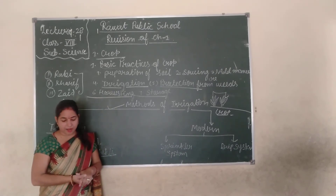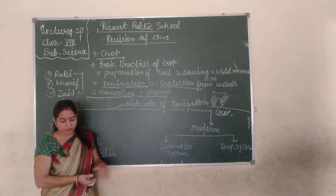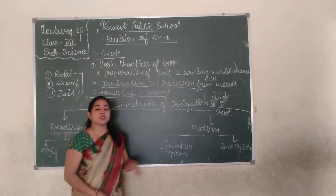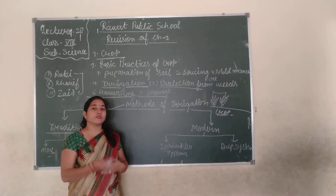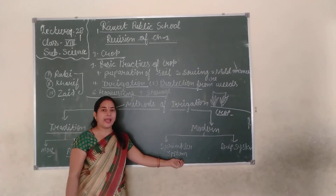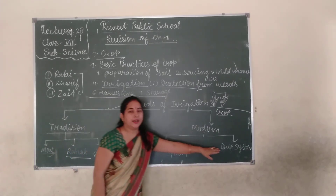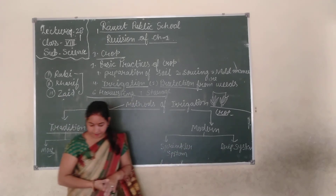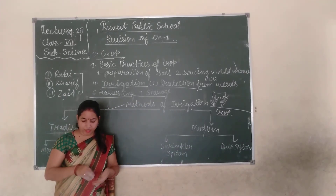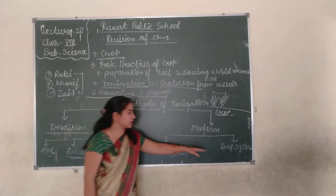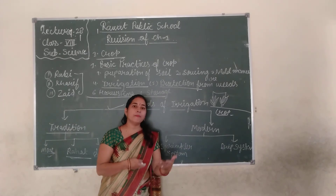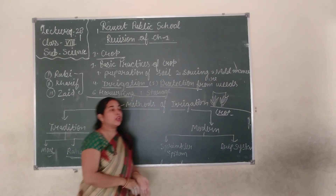In the sprinkler system, it is more useful for uneven land. In the drip system, the water is supplied drop by drop to the crop. This system provides water drop by drop.